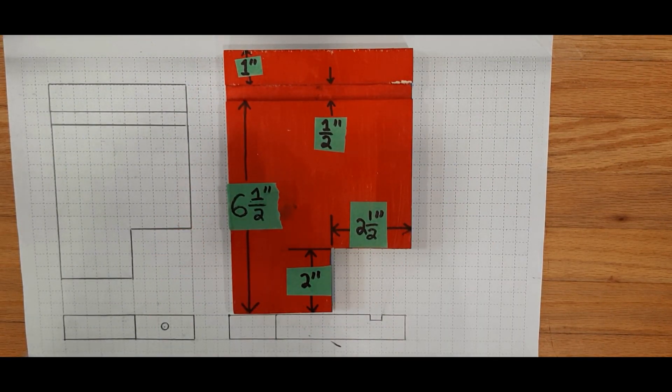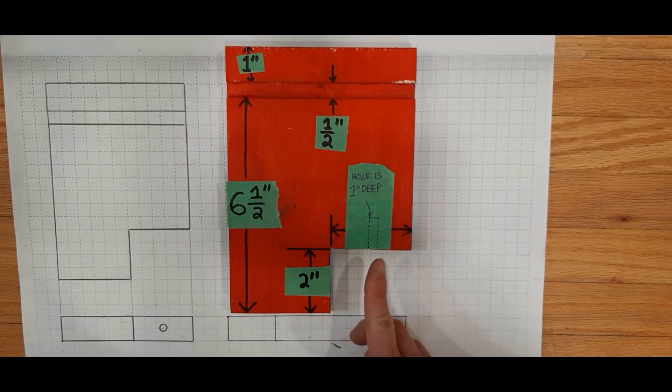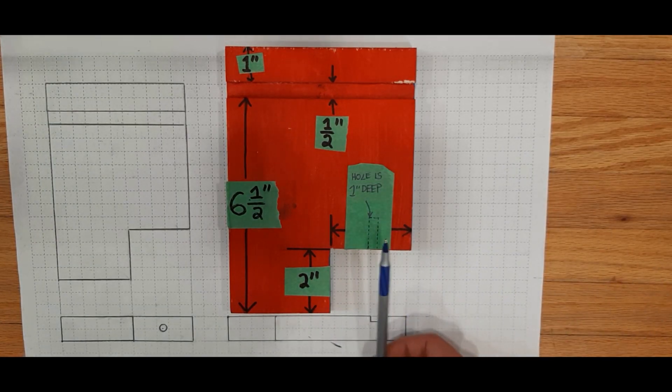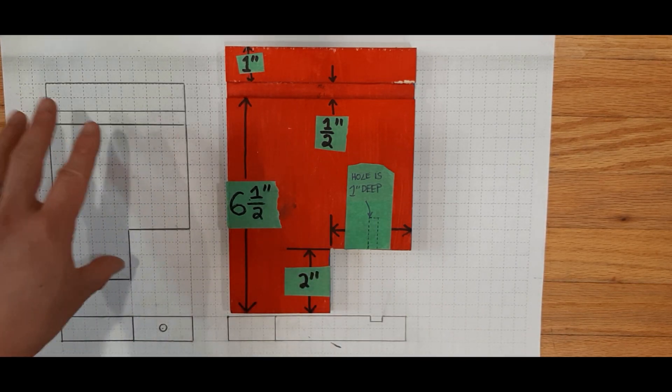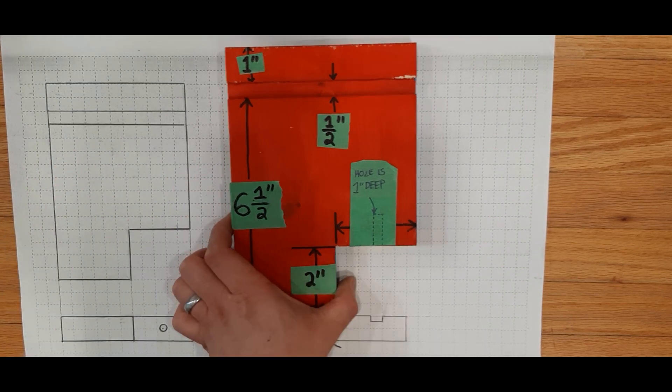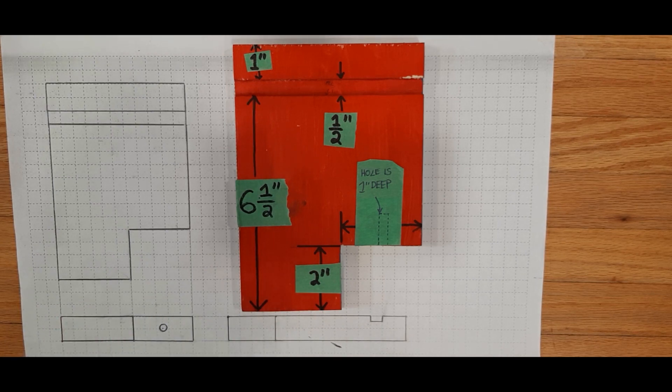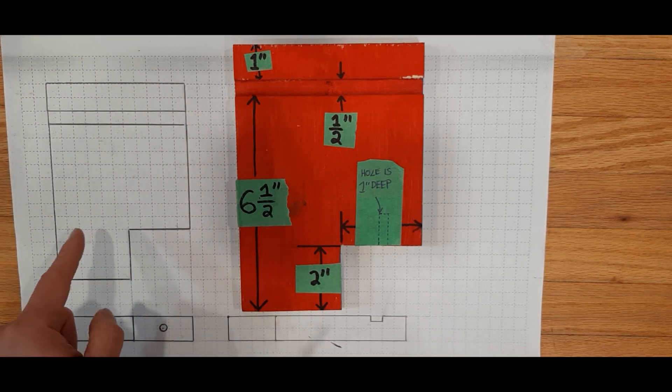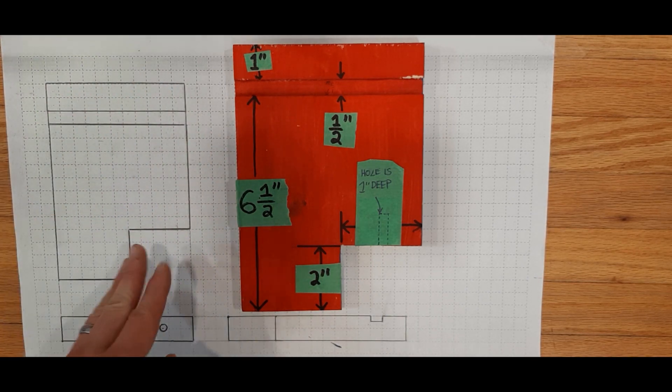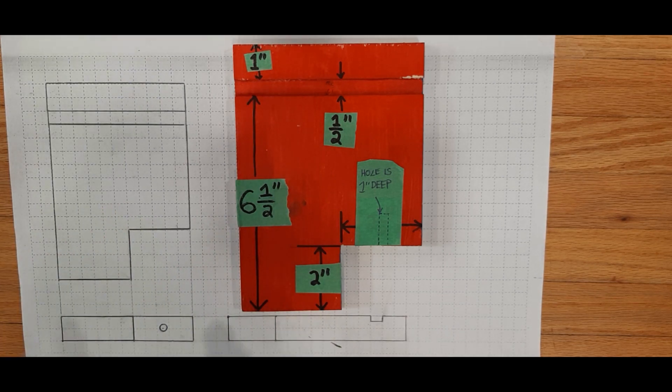So let's pretend that we had x-ray vision and we could peer inside the piece of wood. And this is what we could see, that the hole is actually one inch deep. Well, we would need to communicate that in our orthographic drawing. The way we would do that is we would use hidden lines. To draw a hidden line, you're drawing dotted lines. They're not solid because all the solid lines are visible features. The dotted lines are saying, hey, this feature exists, but you could only see it if you had x-ray vision.